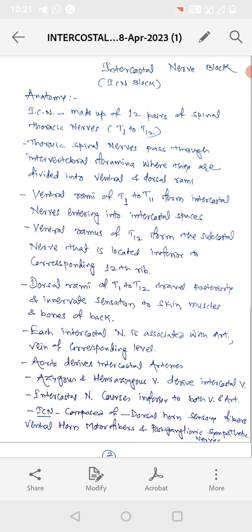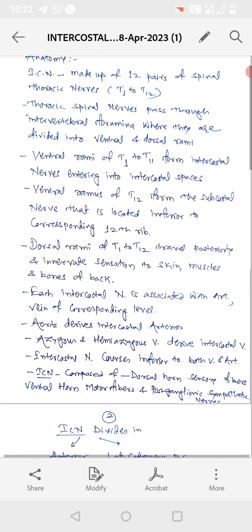Thoracic spinal nerves passes through the intervertebral foramina where they are divided into ventral and dorsal rami. Now this ventral rami of T1 to T11 form intercostal nerve that enter into the intercostal spaces.